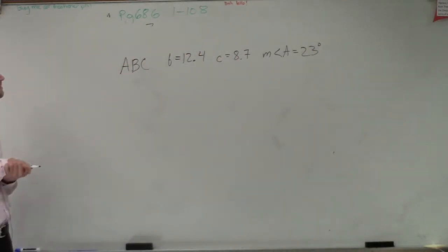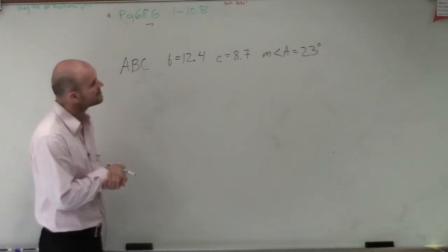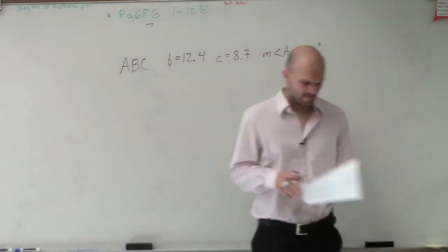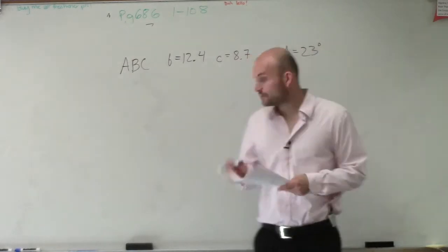Let's look at a triangle ABC where b equals 12.4, c equals 8.7, and angle A equals 23 degrees. So what we need to do is figure out... what is the question asking us to do? They want us to find a.